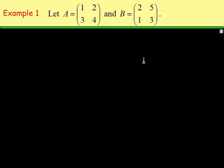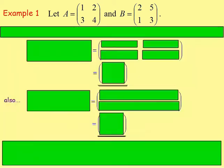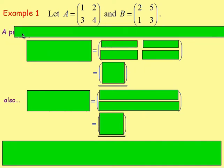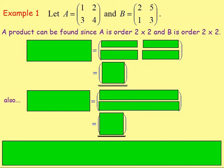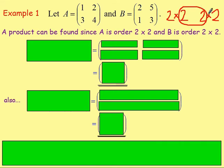Example 1: let A be [1, 2; 3, 4] and let matrix B be [2, 5; 1, 3]. Can you multiply these matrices together? Well, yes you can, because A is of the order 2 by 2 and B is of the order 2 by 2. You always need to make sure that the inner numbers are equal. If they are equal, you can multiply the matrices together, and the resulting matrix will be a 2 by 2 matrix.